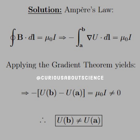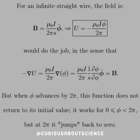We see that the closed integral of B dot dL is equal to μI. So if we apply what B is as a scalar, that would be negative del U. This allows us to apply the gradient theorem, giving us U evaluated at the end point. So U of B minus U of A equals μI, which is not equal to zero.